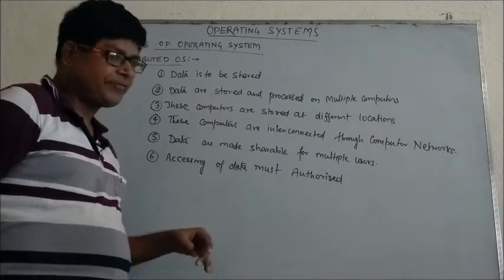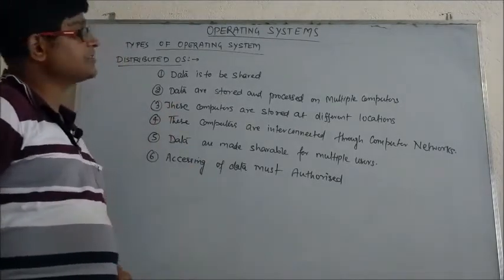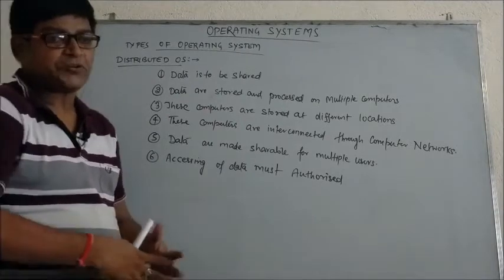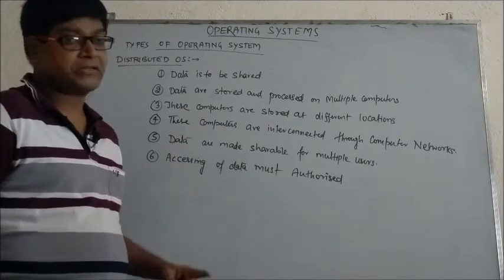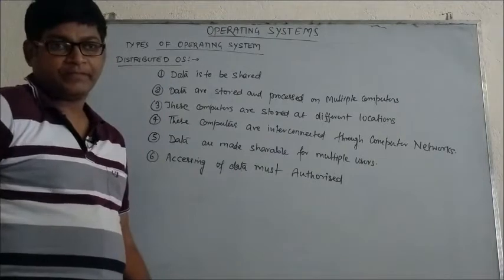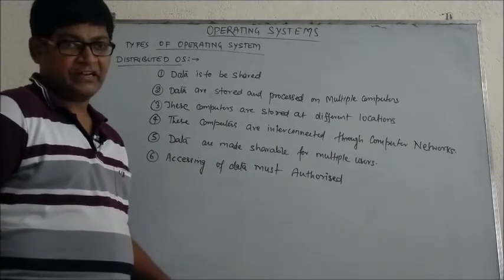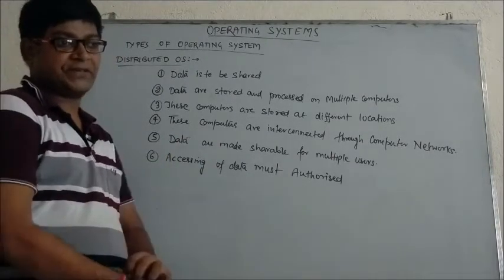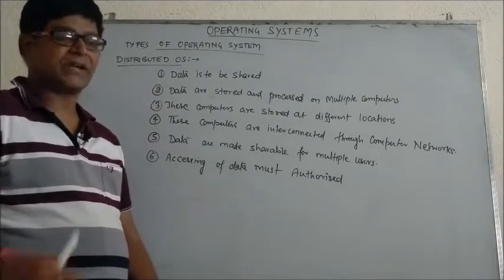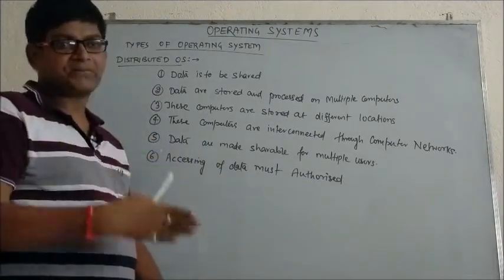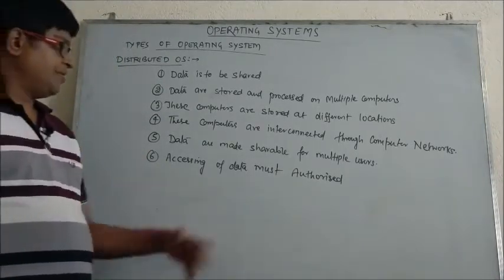The first point is that data has to be shared — we want key data to be shared. The second point is how it will be shared: data will be shared by storing and processing it on multiple computers. These computers are stored at different locations. If data is being stored and processed on multiple computers and you want that data, these multiple computers must be located at different positions.